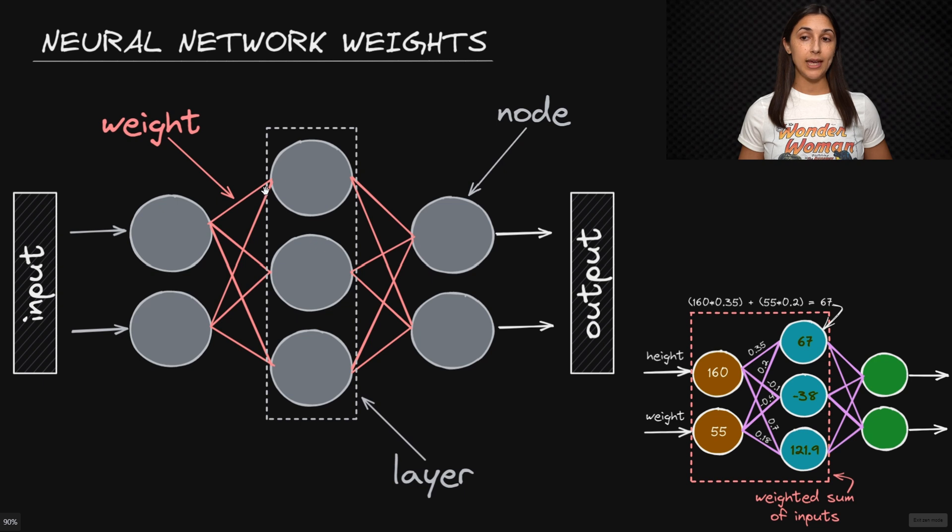The values assigned to each of these weights in the network are first randomly initialized. Later during some training process, the network will learn the optimal values for these weights over time that will lead to the most accurate mapping of the input data to the correct output classes.